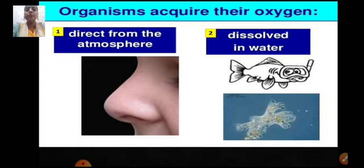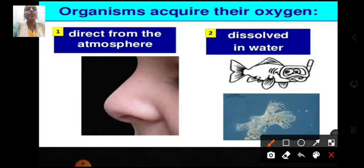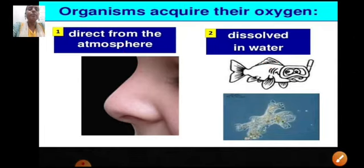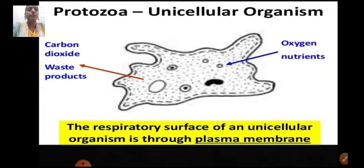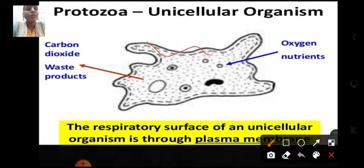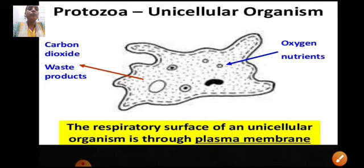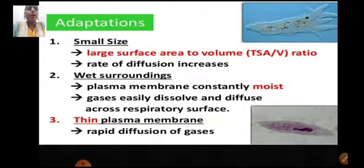Oxygen needed for respiration can be acquired directly from the atmosphere by terrestrial organisms, or from oxygen dissolved in water by aquatic animals. In unicellular organisms, they are too small so diffusion is very rapid. For a protozoan such as amoeba, the respiratory surface is the plasma membrane — gaseous exchange by diffusion takes place through the membrane only, which is sufficient to fulfill the energy demands of such small organisms.